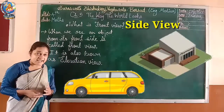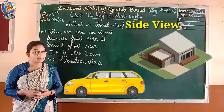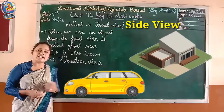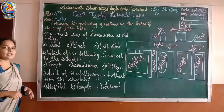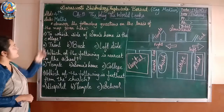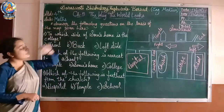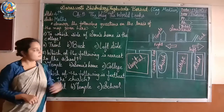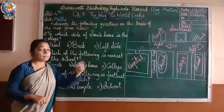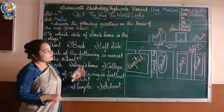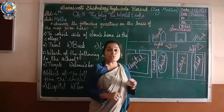Even you can see these things from the side view also. Now let's see an exercise on this topic. The heading is: answer the following questions on the basis of the map given here. In this map you can see Sonu's house, and on its right side there is a temple.